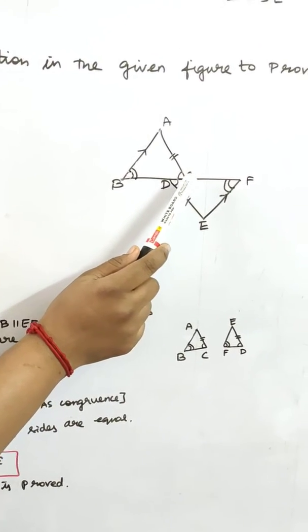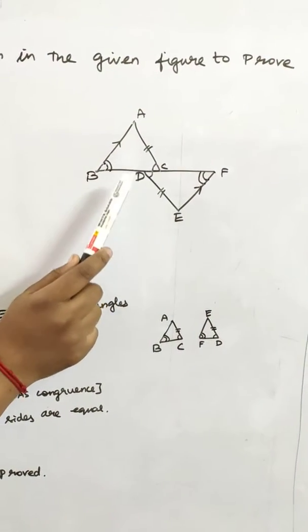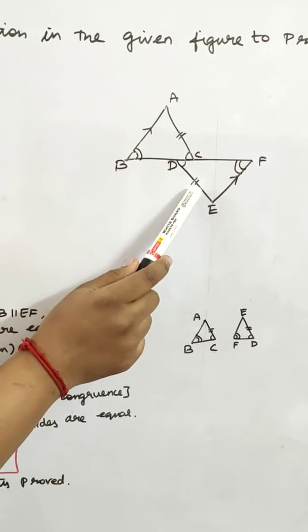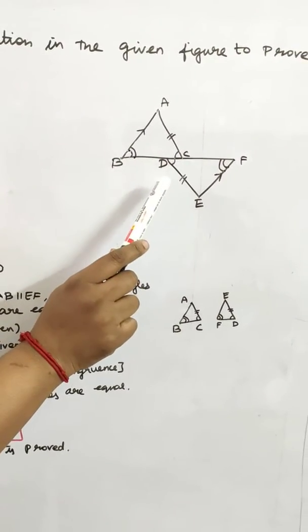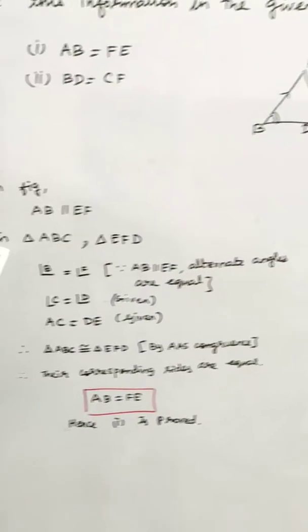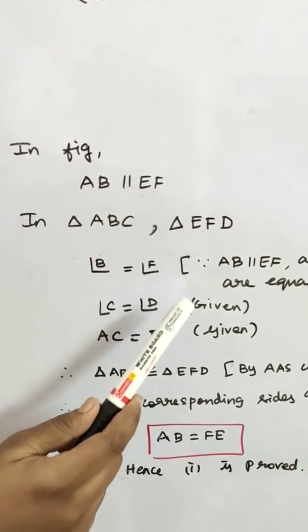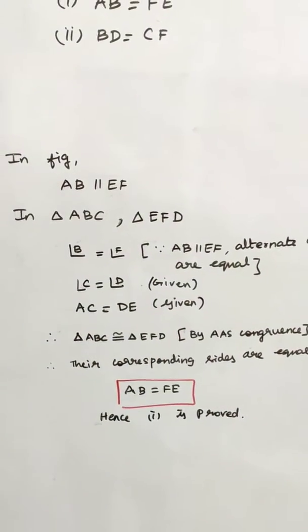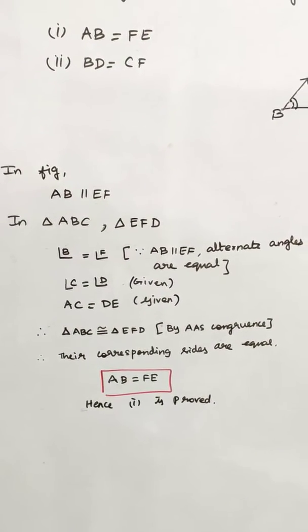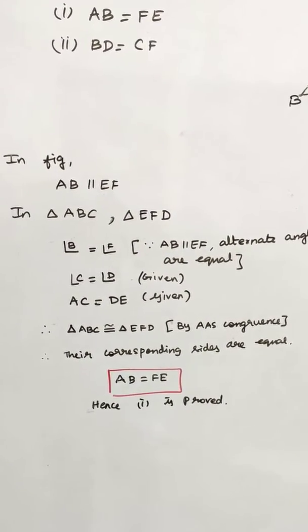Now considering triangle ABC and triangle EFD, angle B equal to angle F. Since AB is parallel to EF, alternate angles are equal. Then angle C equal to angle D is given.